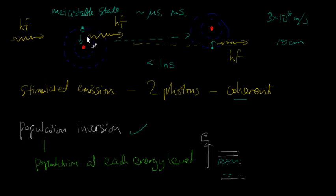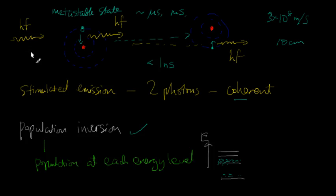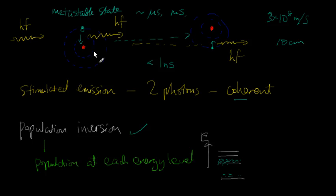We know how to excite electrons. From the earlier videos, I've talked about things like shining light on the material, like the hydrogen emission, or just heating it, or shooting a beam of electrons through it. So there are many ways to excite electrons. The trick is to make them stay up. So what kind of material has electrons that tend to stay up for long enough before falling into the lower state?